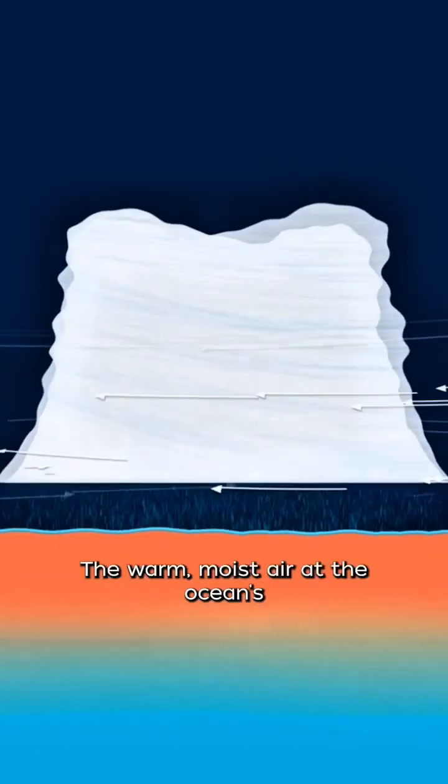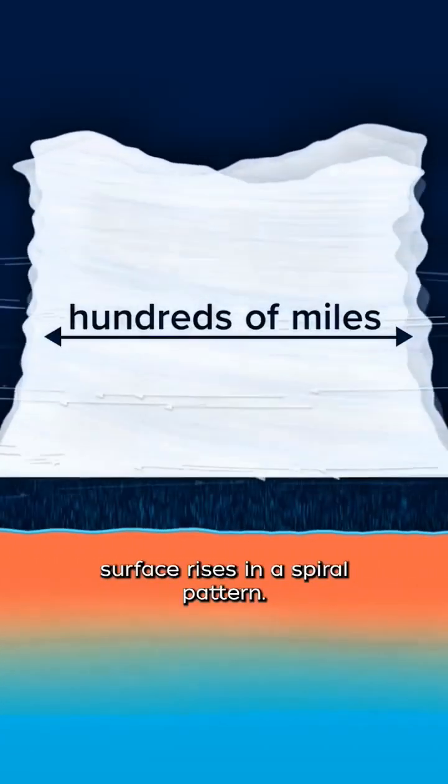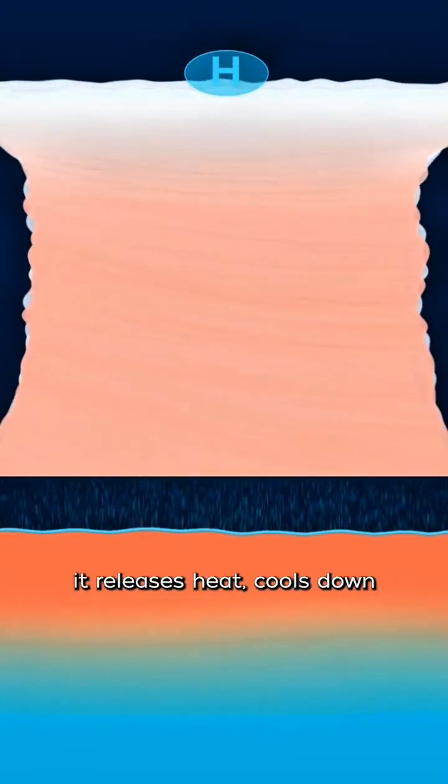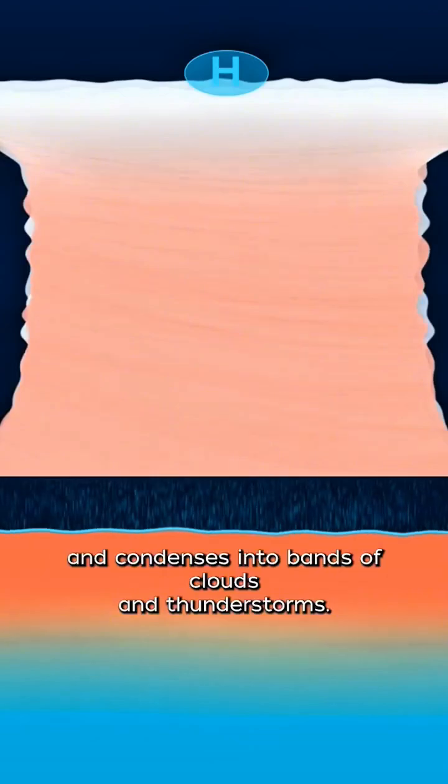The warm, moist air at the ocean surface rises in a spiral pattern. As this moist air ascends, it releases heat, cools down, and condenses into bands of clouds and thunderstorms.